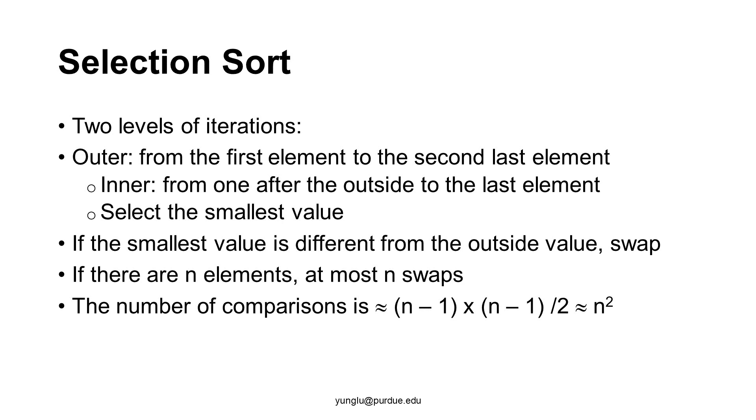If the smallest value is different from the first element in the remaining part of the array, swap them. If an array has n elements, the selection sort will swap at most n times.